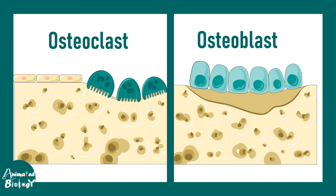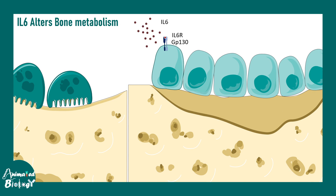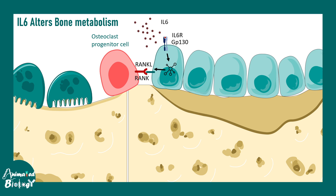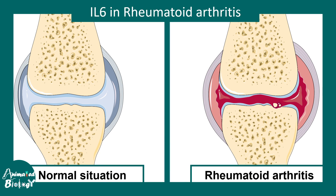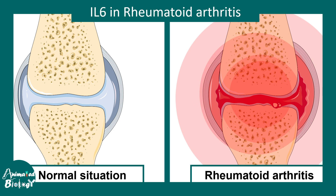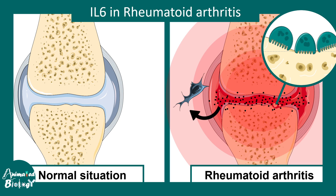Interleukin-6 can also alter bone homeostasis. Inside bone there are two major cell types: osteoclasts and osteoblasts. Interleukin-6 can be received by osteoblasts, which have the IL-6 receptor, triggering a molecular pathway that leads to expression of RANK-L. RANK-L and RANK-mediated signaling trigger osteoclasts to differentiate into mature osteoclasts, increasing osteoclastic activity and bone erosion. This is especially relevant in rheumatoid arthritis, where synovial fibroblasts also secrete IL-6, further driving osteoclast activity and creating a vicious cycle of inflammation.